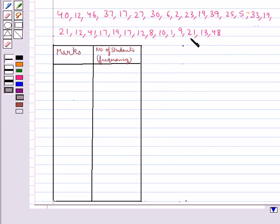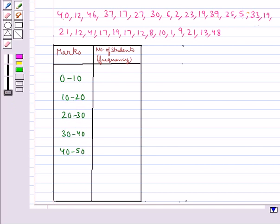This data gives marks out of 50 obtained by 30 students of a class in a test. To present such a large amount of data so that a reader can make sense of it easily, we condense it into groups called classes or class intervals. Observing this data, we can form the class intervals as 0 to 10, 10 to 20, 20 to 30, 30 to 40, and 40 to 50.